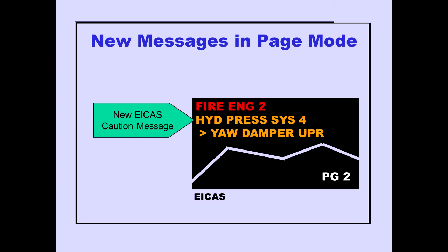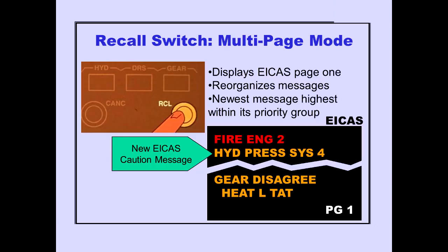A new ICAST alert message is always displayed on the page being viewed at the top of its respective priority group. In this example, page two is being viewed and a new ICAST caution message, hydraulic pressure system four, is displayed as the first caution message on page two, even though advisory messages and other caution messages are displayed on page one. Pushing the recall switch displays page one and reorganizes the message list into the correct order, with the newest message in each priority group at the top of that group.